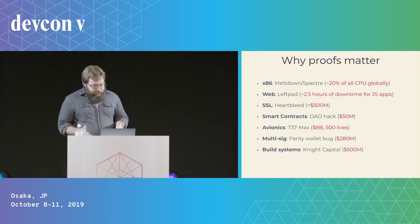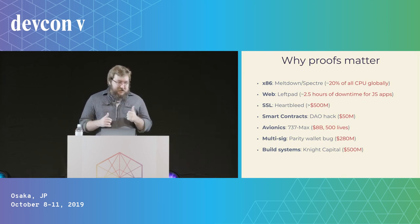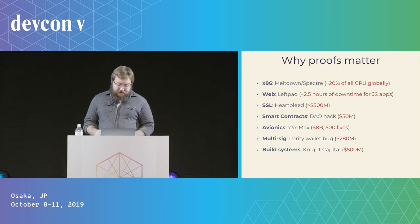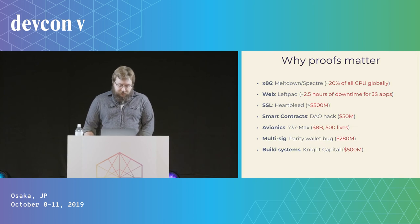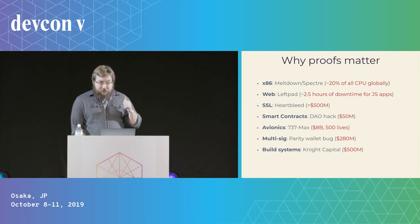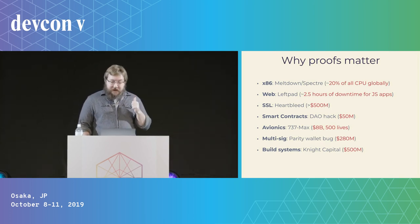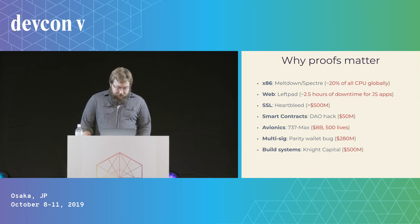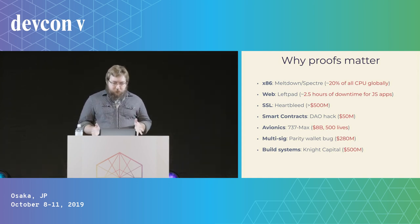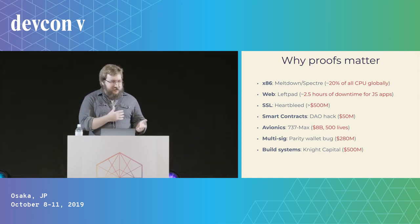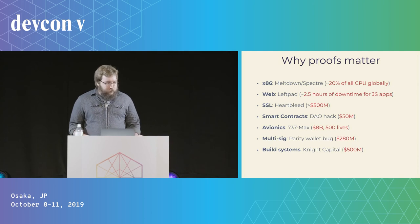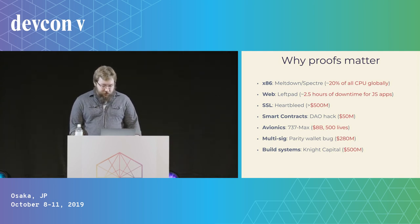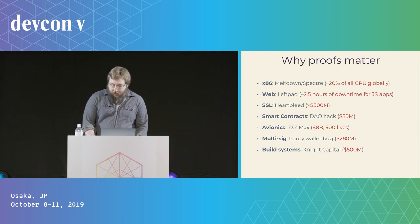Here's why proofs matter. Here's a sample of some costly issues that have happened at different parts of the stack that perhaps could have benefited from proofs and type safety. Heartbleed? That's just an out-of-bounds indexing error. Proofs aren't a silver bullet because all these issues are really complicated, but if proofs can reduce the severity or incidence of these kinds of errors even just a little bit at the margin, I think it's worth exploring.